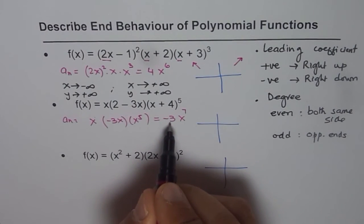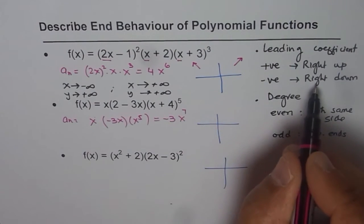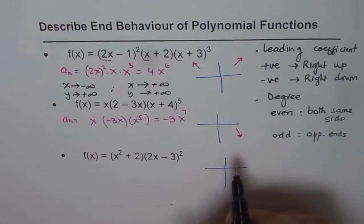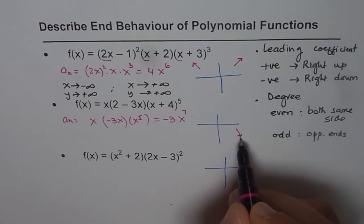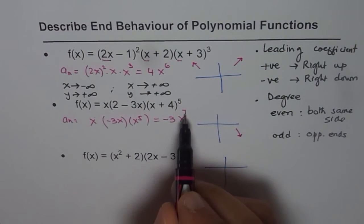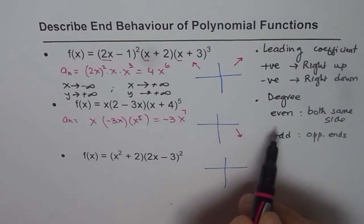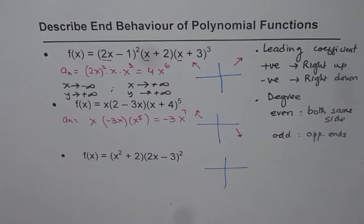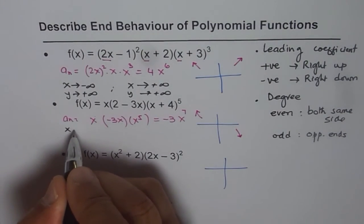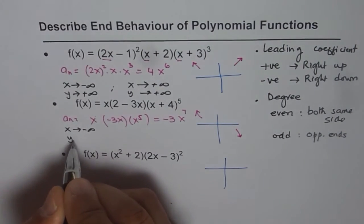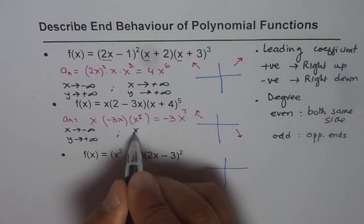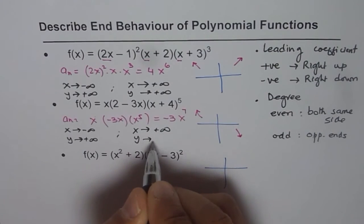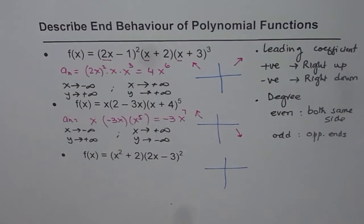The leading coefficient is negative 3. Since the leading coefficient is negative, the right side is down, so as x approaches positive infinity, y approaches negative infinity. The degree is 7, which is odd — odd degree means opposite ends. So as x approaches negative infinity, y approaches positive infinity, and as x approaches positive infinity, y approaches negative infinity.